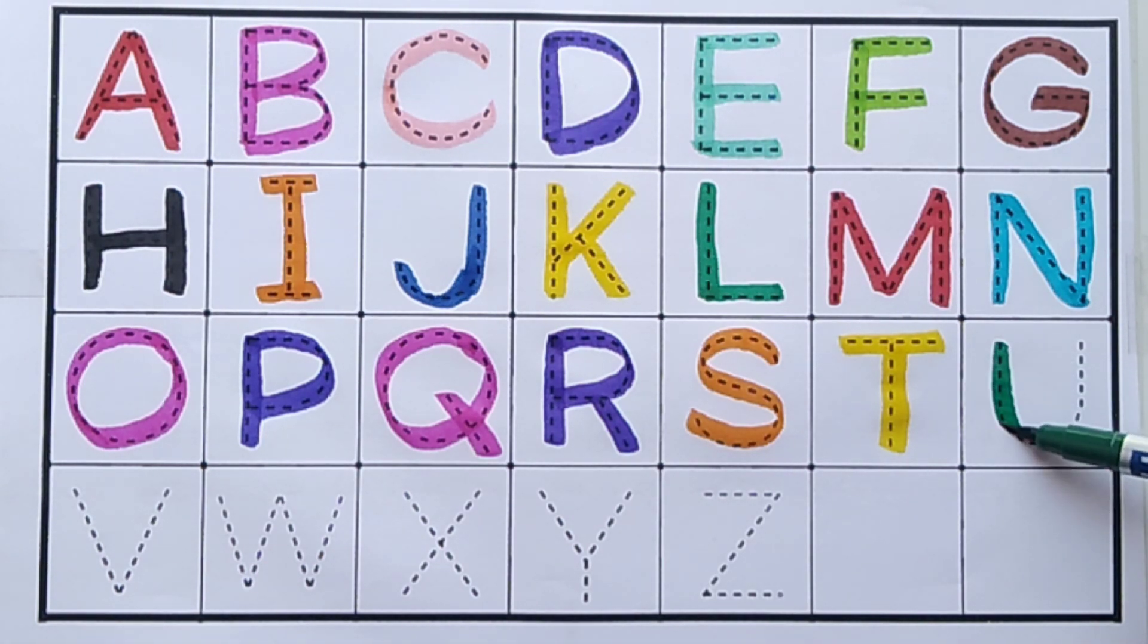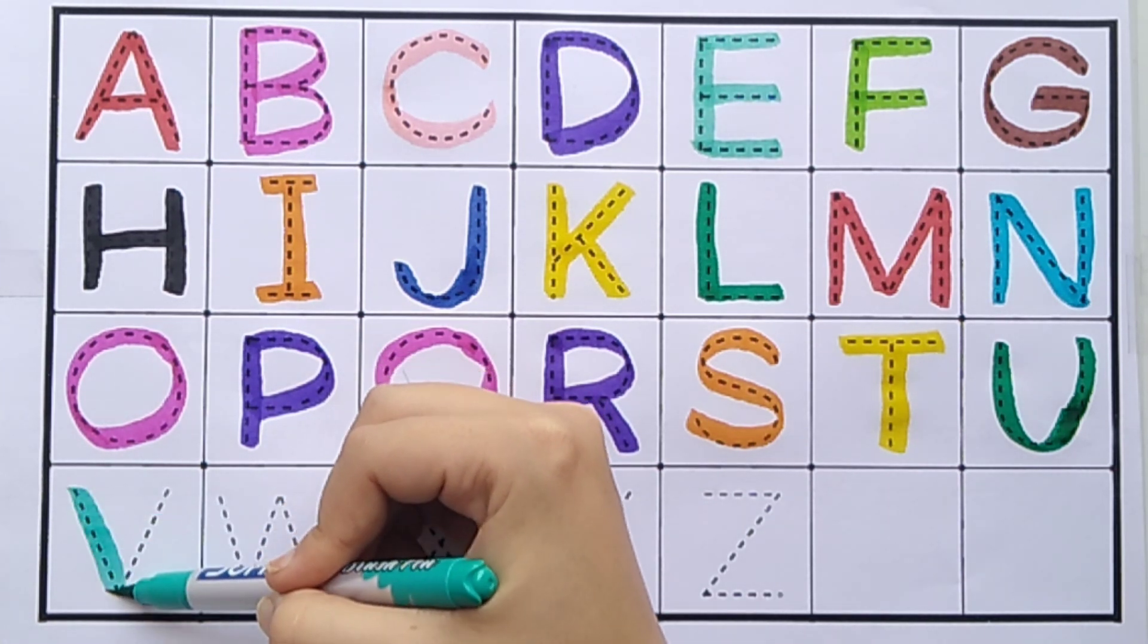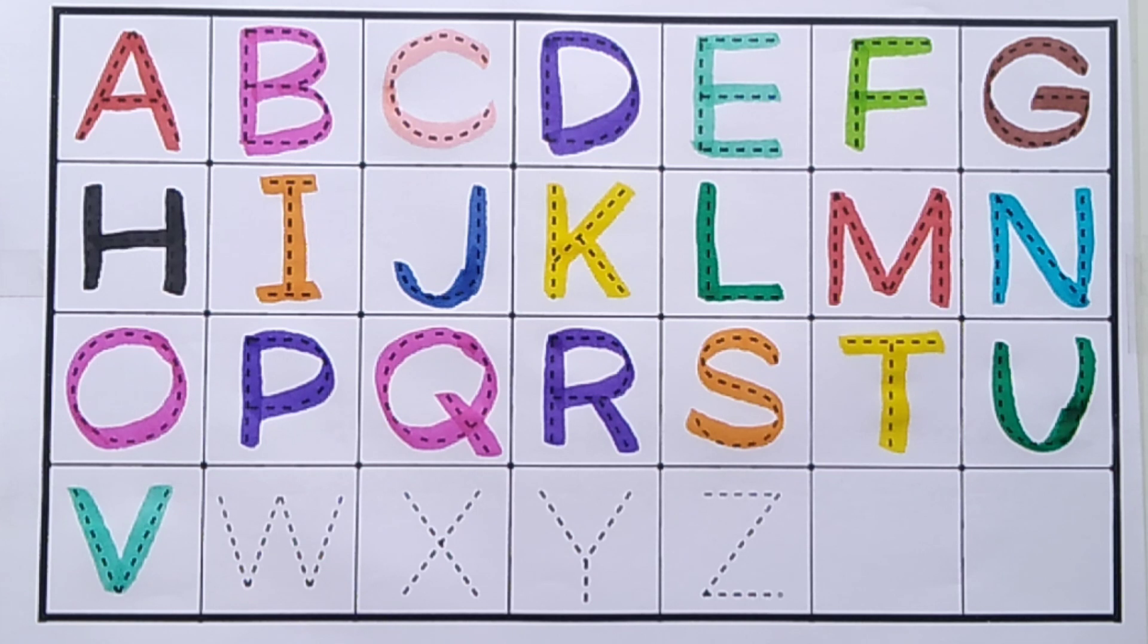Dark green color. U, U for umbrella. Sea green color. V, V for van.